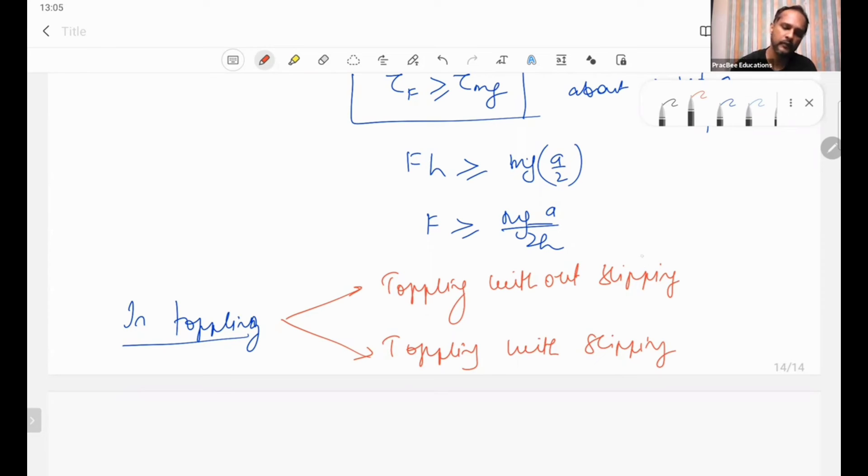In this case, toppling occurs first and slipping might occur if force is increased beyond the point.